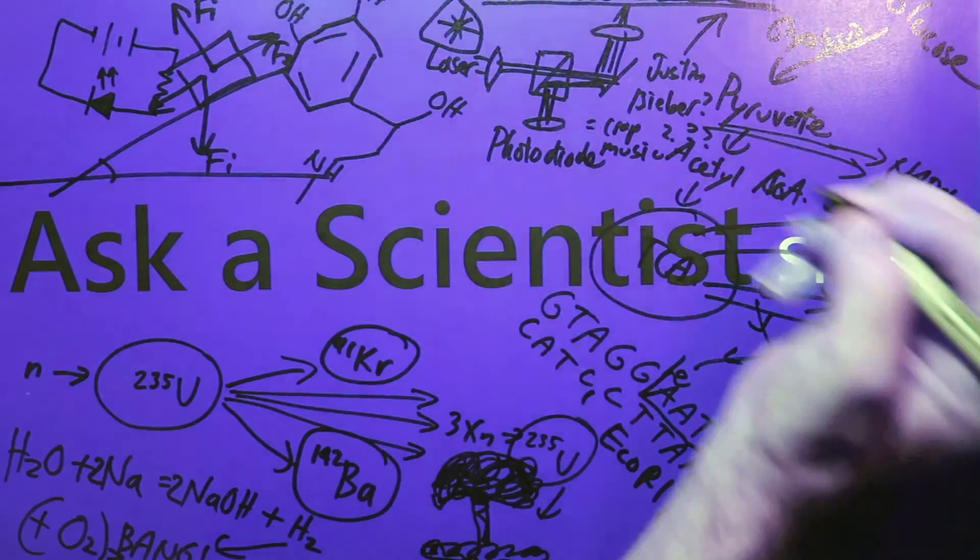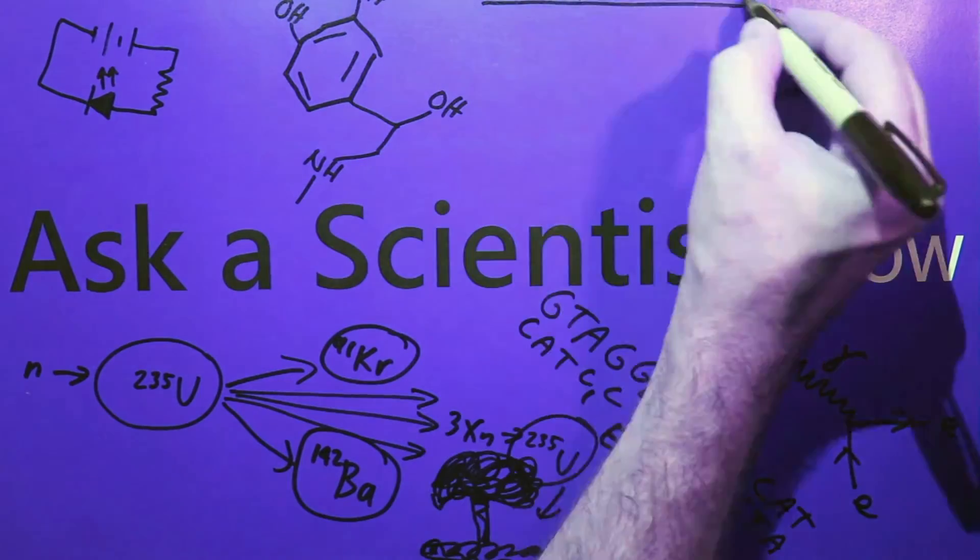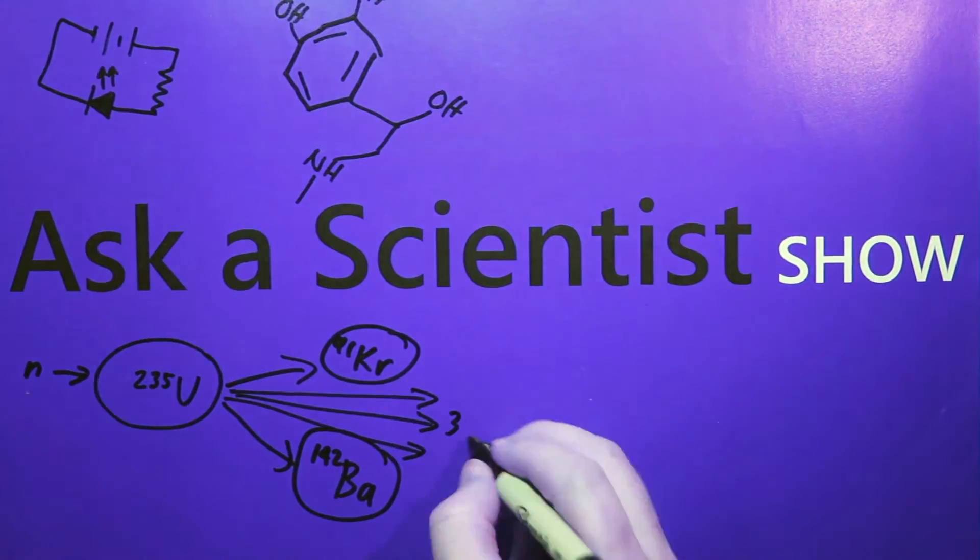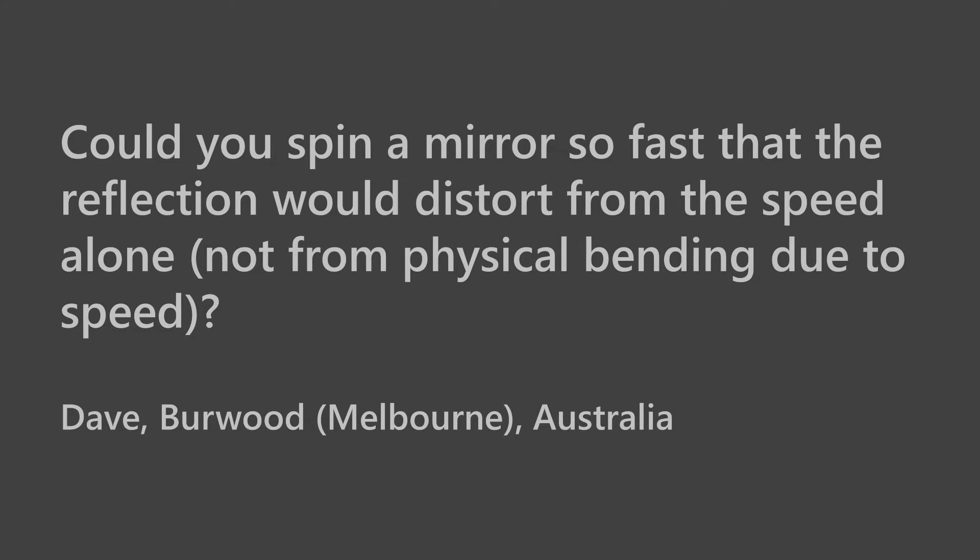Episode 1.5 begins now. The question we have today: could you spin a mirror so fast that the reflection would distort from the speed alone and not from the physical bending of the mirror? And that's from Dave in Melbourne, Australia.